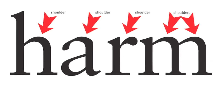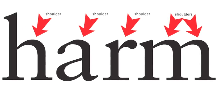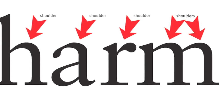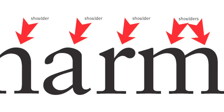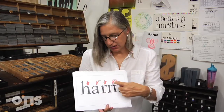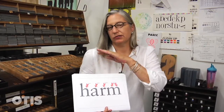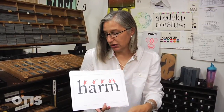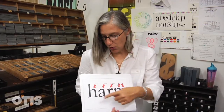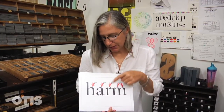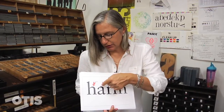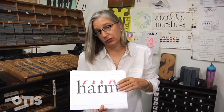A shoulder is a curved part of the letter form that generally comes off of a main stroke. If you imagine these to be body parts, they actually look like shoulders. So it doesn't matter whether they go all the way down or just partially up — that curve is called a shoulder.